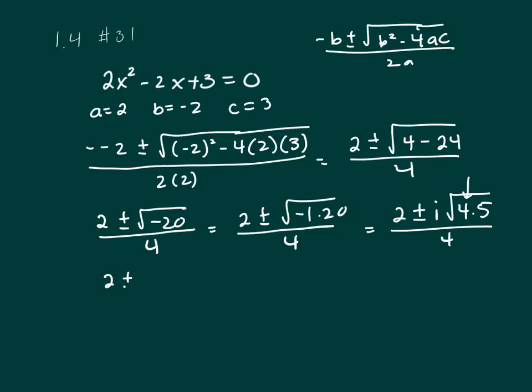So this is 2 plus or minus i. Square root of 4 is 2, so bring out a 2 times the square root of 5 over 4.